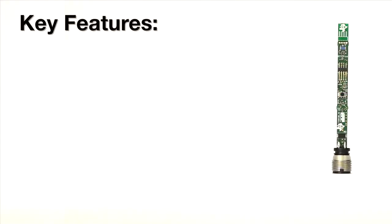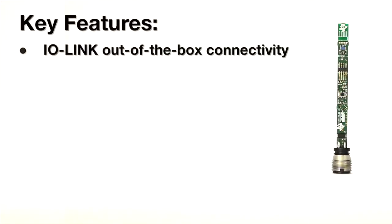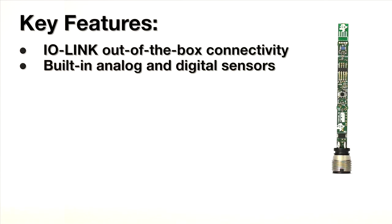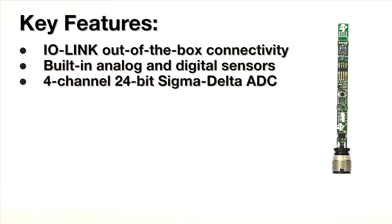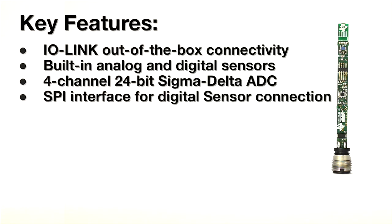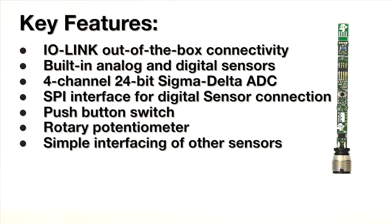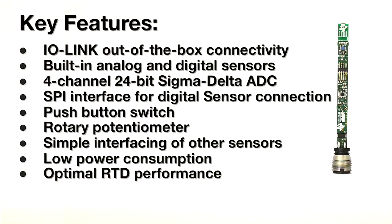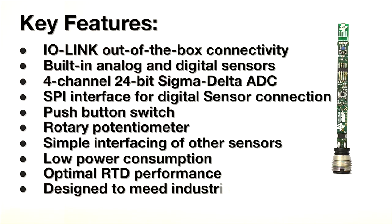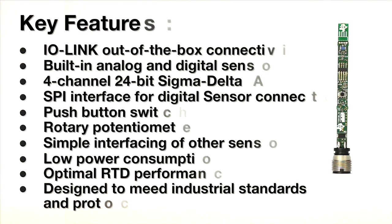Key features of this solution are IO-Link out-of-the-box connectivity, built-in analog and digital sensors, 4-channel 24-bit Sigma Delta ADC, SPI interface for digital sensor connection, push-button switch, rotary potentiometer, simple interfacing with other sensors, low power consumption, optimal RDT performance, and designed to meet industrial standards and protocols.